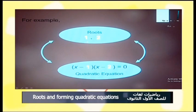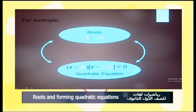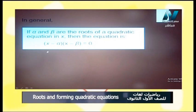For example, if the two roots are 1 and 2, the quadratic equation is x minus 1 multiplied by x minus 2 equals 0. If the two roots are 0 and negative 4, it is x minus 0 multiplied by x minus negative 4 equals 0. In general: if alpha and beta are the two roots of the quadratic equation in x, then the equation is x minus alpha multiplied by x minus beta equals 0.